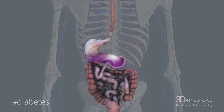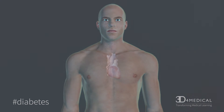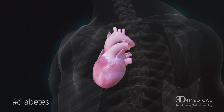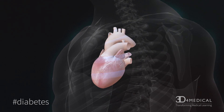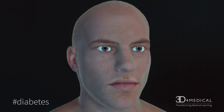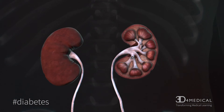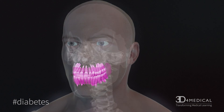Over time, high blood sugar can lead to problems with your heart, eyes, kidneys, gums, and teeth.